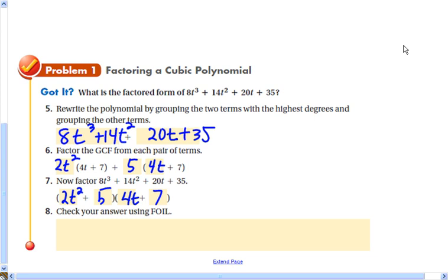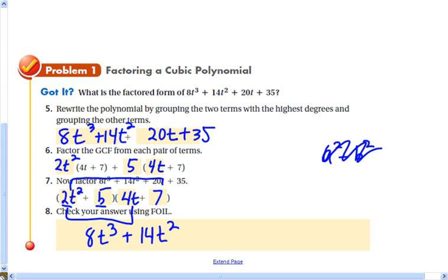Remember in the last problem, we were able to factor a little bit more. Here we can't because that's a binomial and it doesn't fit a² - b². That's because 2t² is not a perfect square, neither is 5. It says check your answer using FOIL. That would give us 8t³, the outers would give us 14t², the inners would give us 20t, and the last two are 35. So it checks with our original polynomial.